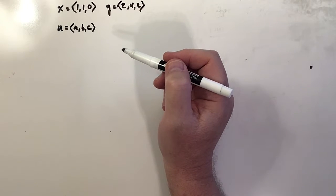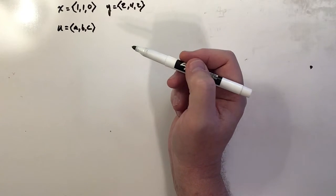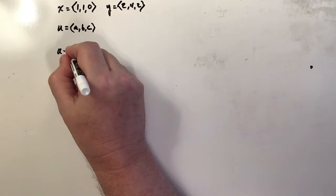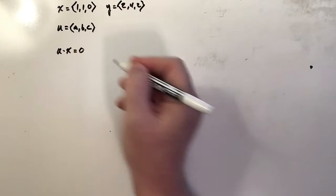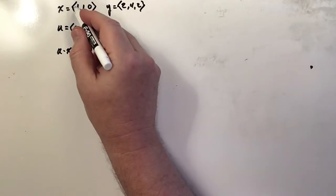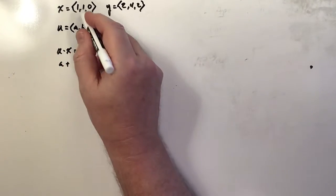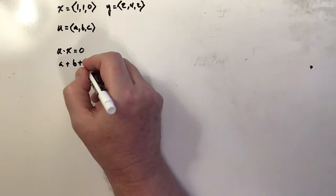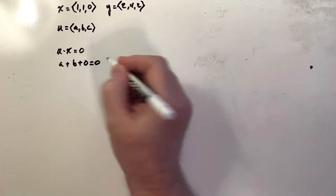That's what we're going to use here. So first we're going to take u dot x and we're going to set that equal to 0. And what is u dot x? That's 1 times a plus 1 times b plus 0 times c, and that equals 0. So that gives me the first equation, which is a plus b equals 0.